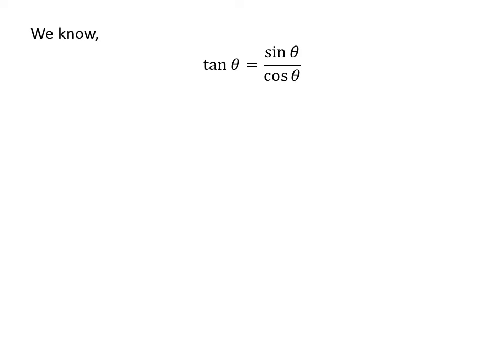We know tangent of theta is equal to sine of theta upon cosine of theta. So the application of the above trigonometry identity gives us tangent of pi plus x is equal to sine of pi plus x upon cosine of pi plus x.